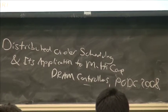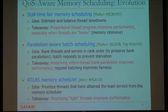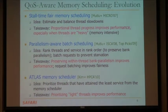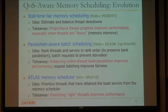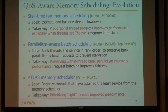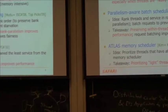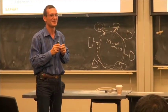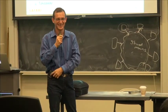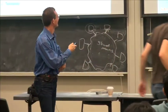The takeaway: if you preserve within-thread bank parallelism, you can improve performance. And if you have request batching, you can improve fairness. We've seen Atlas in the end — the idea was to prioritize threads that have attained the least service from the memory scheduler. If you do this, you improve performance by essentially prioritizing light threads — compute-intensive threads are making progress — and you're minimizing the memory episode times. So maybe you can report next week on how to figure out the compute episodes and prioritize those.